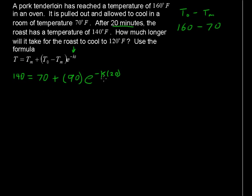Now let's solve for this exponent, this unknown k. So subtract 70 from each side, and you get 70 equals 90 times E to the negative 20k.